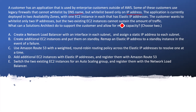The main problem here is the amount of traffic. It has been mentioned that we are using two availability zones and in each availability zone there is one EC2 instance already configured. The only problem is that these two EC2 instances are not able to handle the amount of traffic. What can a solution architect do to support the customer and allow for more capacity?